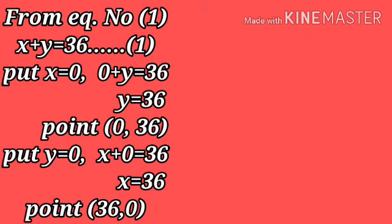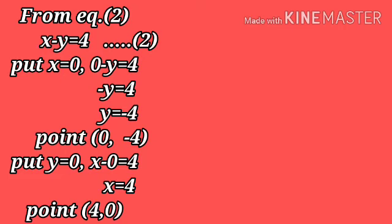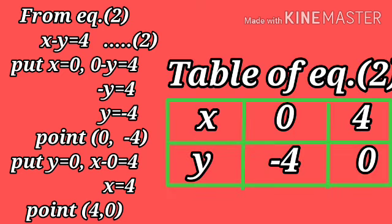From equation 1, x + y = 36: putting x = 0 gives y = 36, so the first point is (0, 36); putting y = 0 gives x = 36, so the second point is (36, 0). From equation 2, x − y = 4: putting x = 0 gives y = −4, so the first point is (0, −4); putting y = 0 gives x = 4, so the second point is (4, 0).